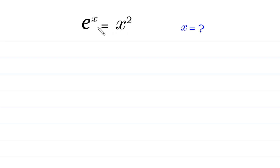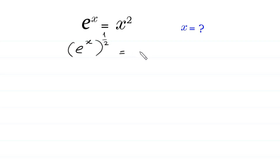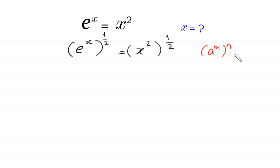First of all, we raise both sides of this equation to the power 1 over 2. e to the power x, whole to the power 1 over 2, is equal to x squared, whole to the power 1 over 2. Now, according to the property of exponents, a to the power m, whole to the power n, is equal to a to the power m times n.